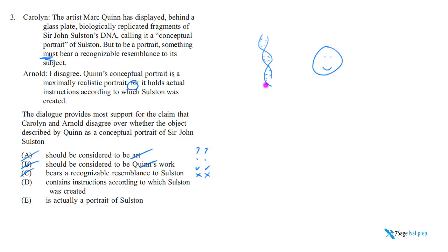D says: contains instructions according to which Solstyn was created. I think they both agree on this — Carolyn's not going to deny biology. So neither one takes a position against it; they both agree. They both agree on A being wrong, and they both agree that D is right. So we've eliminated A, B, C, and D as actual points of disagreement.